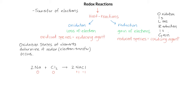Sodium on the left is zero, and on the right side is plus one. We can see that this is a loss of electrons, and so this is oxidation. Chlorine goes from zero to minus one, and this is a gain of electrons, and so this is reduction.